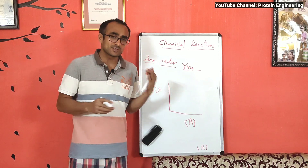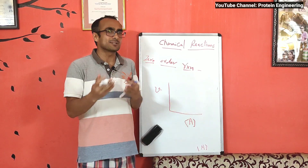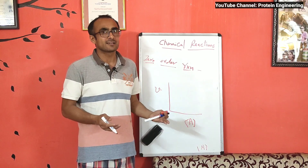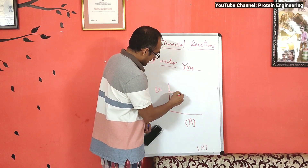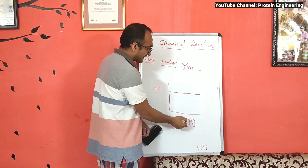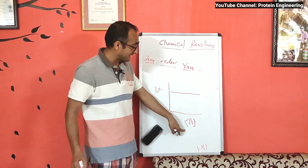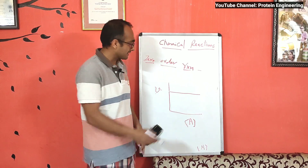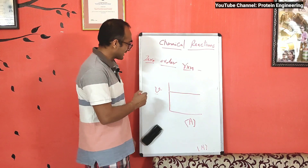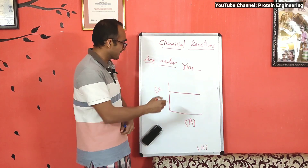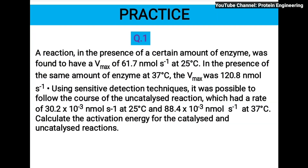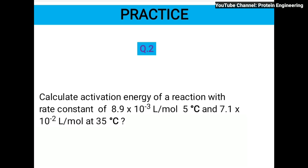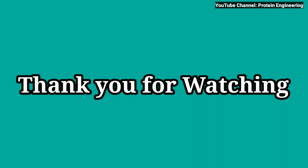Another order is zero order reaction. In a zero order reaction, the rate does not depend on the concentration of the reactant. If you look at the graph, it will be a straight horizontal line — there is no change in rate with respect to change in reactant concentration. The rate remains constant even after changing the reactant concentration. In zero order reactions, the unit of k equals the unit of v, which is mole per second.